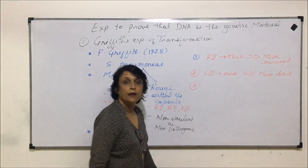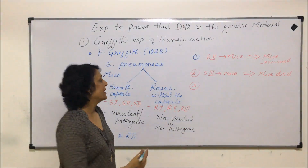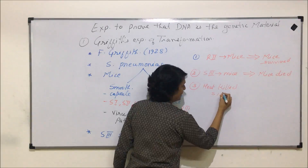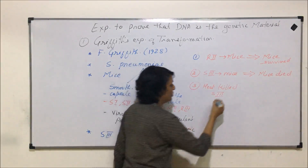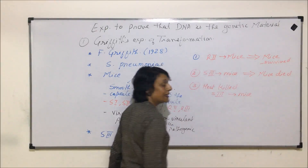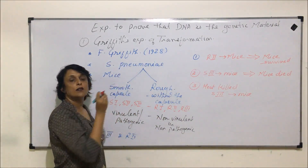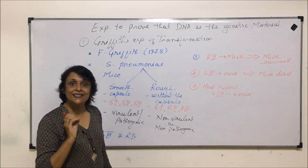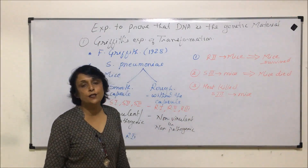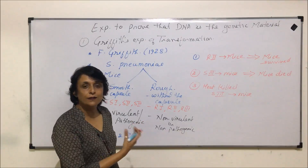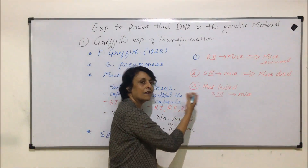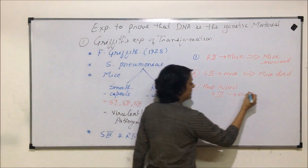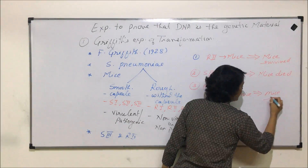In the third experiment, Griffith injected heat-killed S3 type into the mice. These Streptococcus pneumoniae were killed by heating, and that extract of heat-killed S3 was injected into the mice. Because the bacteria were destroyed, nothing was expected to happen to the mice — and the mice survived.